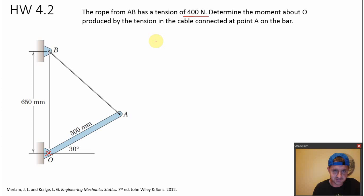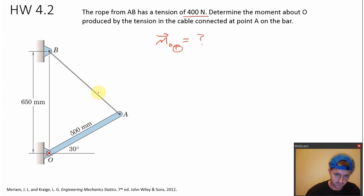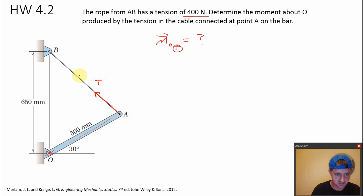So what do I want to find? I want to find the moment about point O produced by tension T. Where is that tension T? That's the tension force within this rope here. Since we're looking at the force that this rope applies on this bar from O to A, the tension would be pulling on that bar in this direction. Here's the line of action of T.